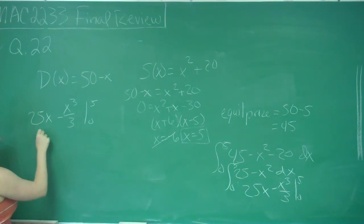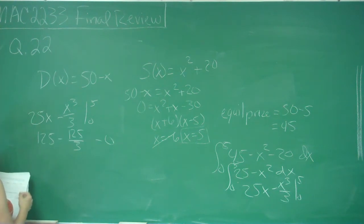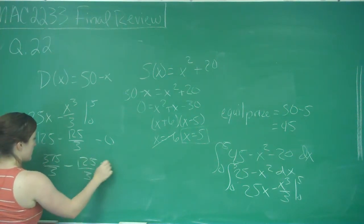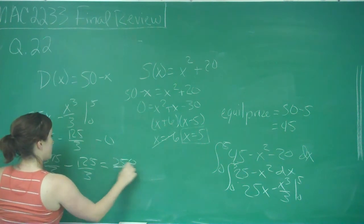Plug in 5 I get 125 minus 125 over 3 minus and if I plug in 0 I get 0. This is like 375 over 3 minus 125 over 3 which is equal to 250 over 3.